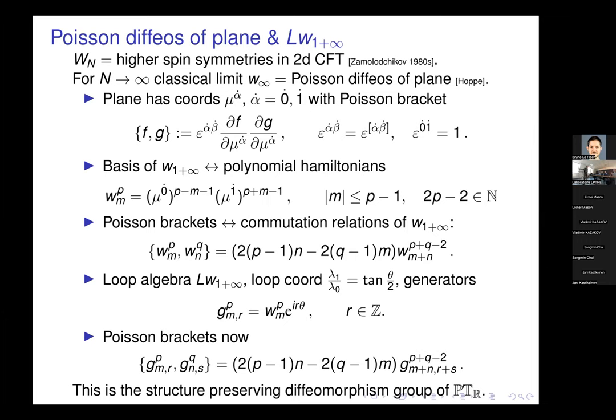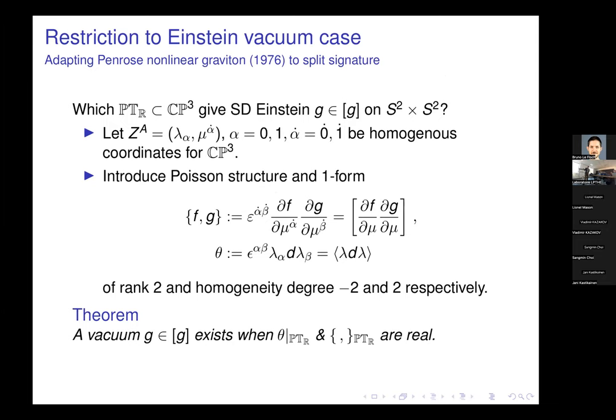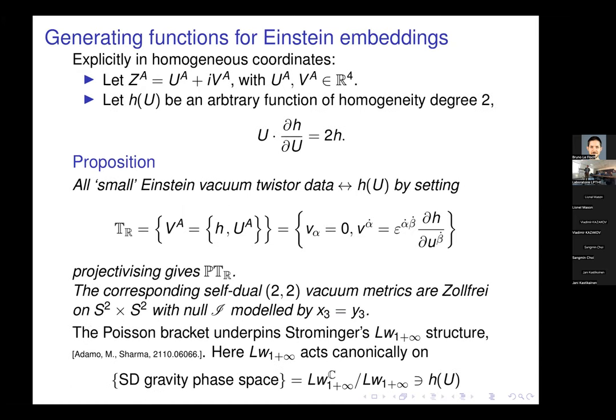What we see here is that this is precisely the group of structure-preserving diffeomorphisms of this real projective twister space — the diffeomorphisms of the real twister space. So Strominger discovered that hiding in the soft limits of gravity amplitudes there is this structure, which is precisely the symplectomorphisms of the asymptotic twister space. That's the first punchline: in self-dual gravity we have a presentation in twister space where the geometric role of LW1-plus-infinity is clear — it is just the structure-preserving diffeomorphisms of the twister space.